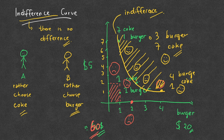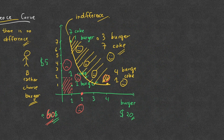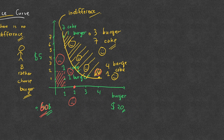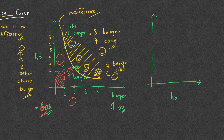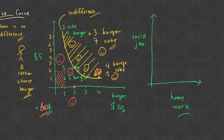The indifference curve looks curved because as things get bigger — more burger or more Coke — it changes in this curved way. For example, take a different graph: this axis is the amount of homework, and this axis is the amount of your social life. Some people like homework, some don't. The curve for this won't look like a straight line — it will look more like this curved shape.